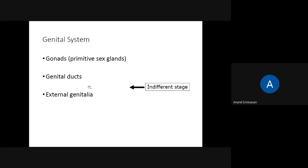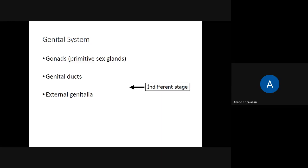We will then see the development of the external genitalia — initially how it is in the indifferent stage, and how it differentiates into male and female. We will cover these three things: development of gonads, development of genital ducts, and development of external genitalia. Apart from the genital system, the rest of the organs — heart, lungs — are almost the same in males and females.